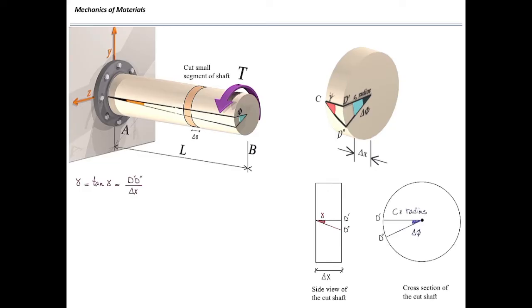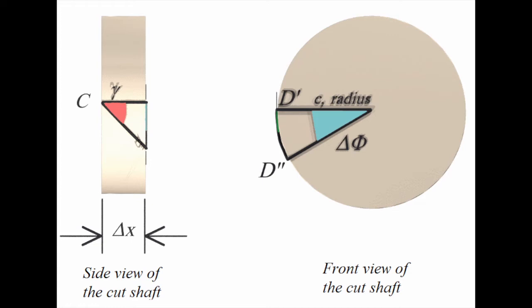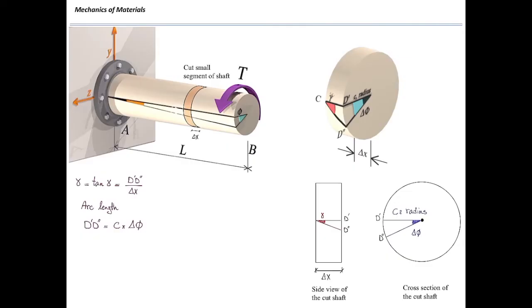Looking from the front view, I call the twist angle here delta phi. Note that this angle is not the same as gamma — it's a different angle. The arc length d-prime d-double-prime can be determined from this angle and the radius c. That arc length equals c multiplied by the angle delta phi. Plugging that back in, gamma equals c times delta phi divided by delta x.